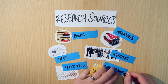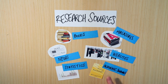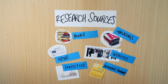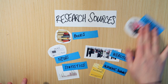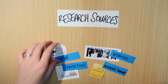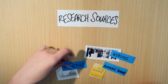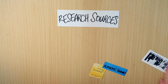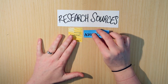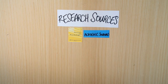Academic journals are the main source that your psychology instructors want you to use when doing your research paper. So for the purposes of this type of research, we're not going to look at magazines, books, news, statistics, or websites. What we're really going to focus on is academic journals. So let's talk a little bit more about what they are.